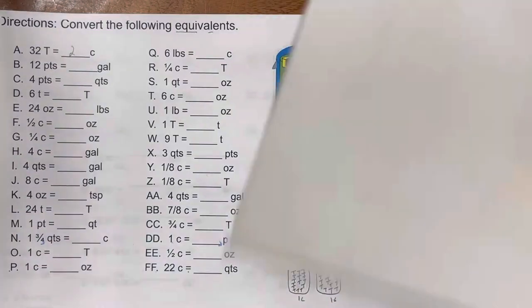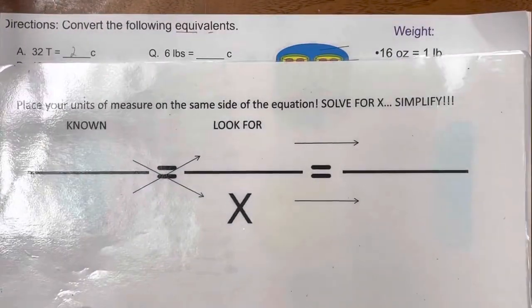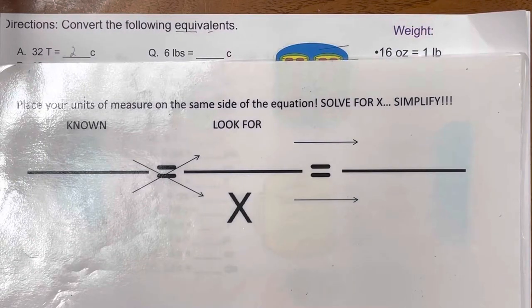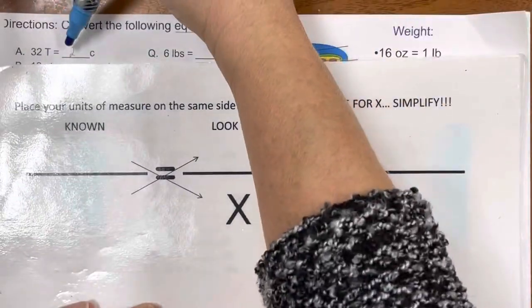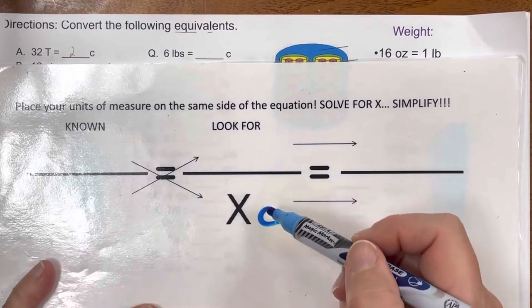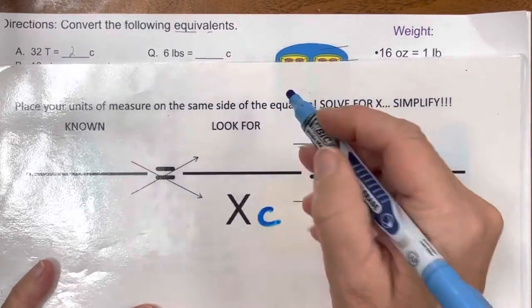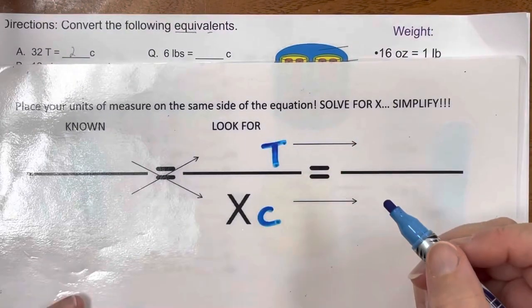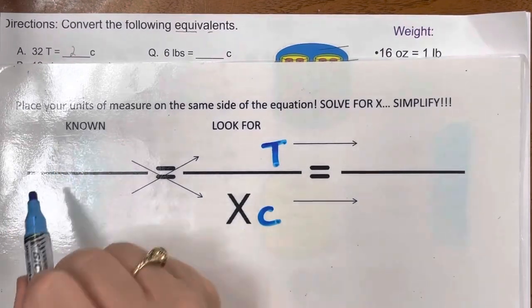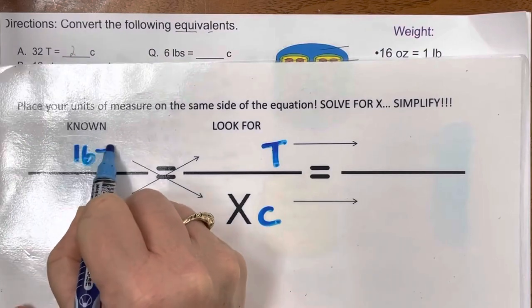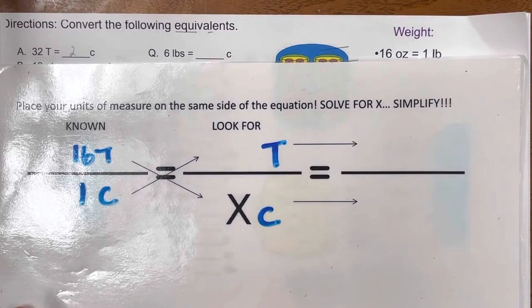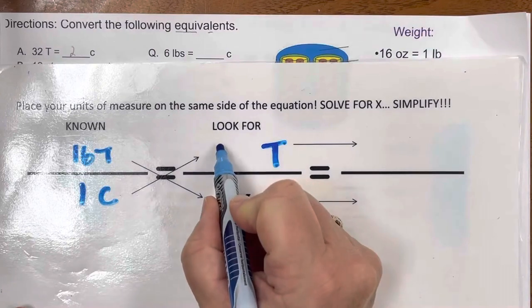Or I have a formula that I'm going to show you. We are solving for x, which was 2. So the x goes here. The c for the x goes here, the unit of measure. Then that means the tablespoon goes up on top. So I know I have 16 tablespoons in one cup. So then I'm looking for 32 tablespoons.